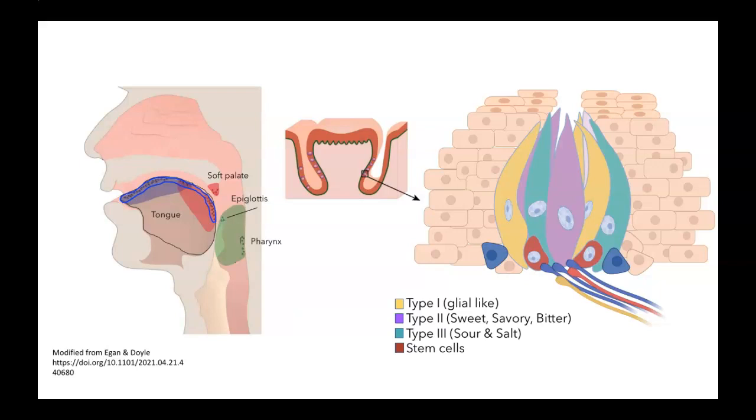The taste receptor cells release transmitters onto the primary afferent neurons shown at the bottom. Each taste bud is innervated by about 50 different neurons. Each of those neurons receives input from about five different taste receptor cells. Now we're going to look at how the information received by these sensory neurons gets processed in the brain.